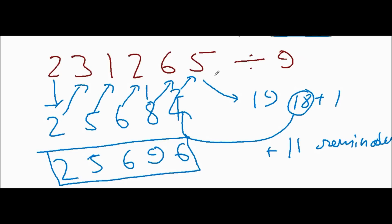So this is our answer. You should keep in mind that the last summation for any digit that comes is always the remainder. And if it is greater than nine, then you can divide it and find the actual remainder.